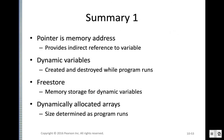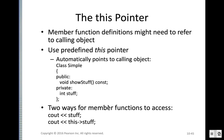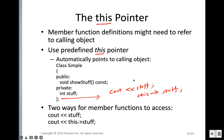In this chapter we learned that a pointer is a memory address that provides an indirect reference to a variable. We learned about dynamic variables — how to create and destroy them during runtime. Dynamic variables are associated with the free store, a special data structure known as the heap. For dynamically allocated arrays, we can determine the size of the array during runtime. That's our summary for this chapter — Chapter 10 of our textbook.